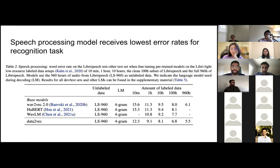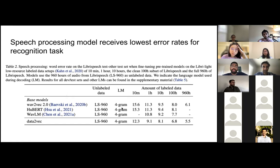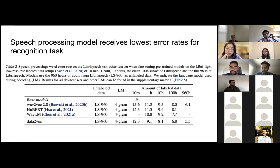For speech processing, they also pre-trained the model and evaluated using Word Error Rate (WER) across different amounts of labeled data — ranging from 10 minutes to 960 hours. Lower is better. Compared to previous work, it performs better across all labeled data amounts, with the largest margin at 10 minutes of labeled data — exactly 3% lower word error rate.